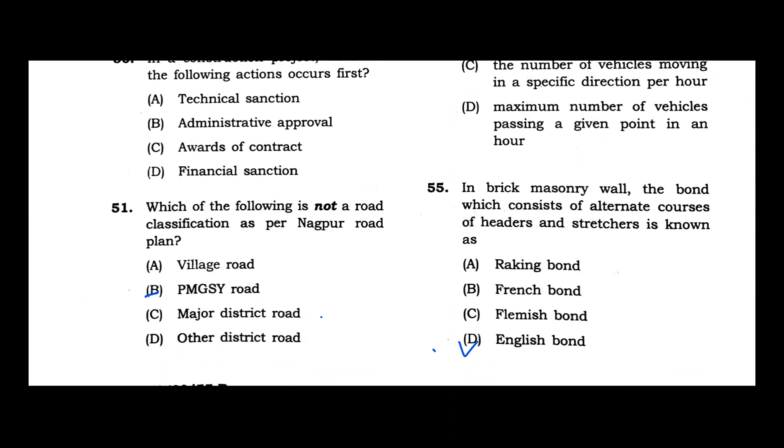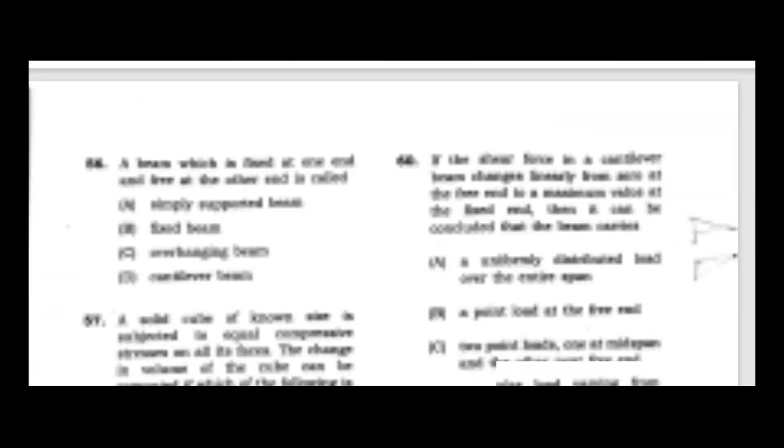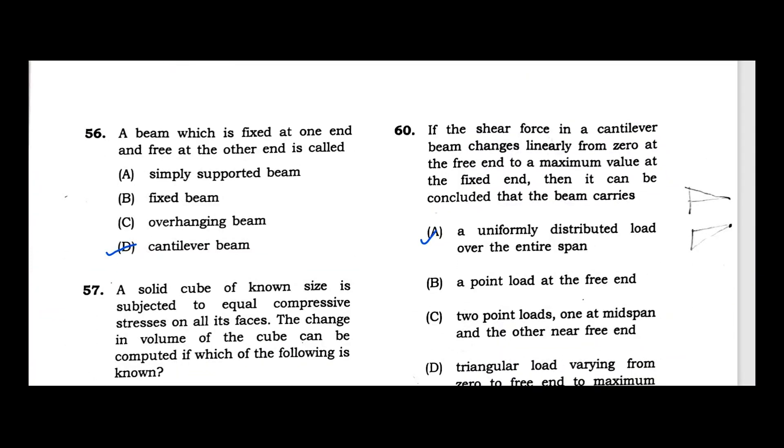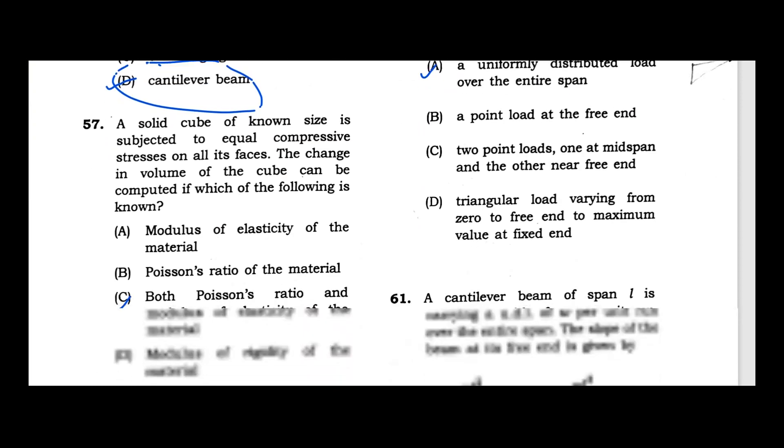Question 55: In brick masonry work, the bond which consists of alternate courses of headers and stretchers is known as English bond. Question 56: A beam which is fixed at one end and free at the other end is called cantilever. Very easy question - cantilever has a fixed support at one end and free at the other.